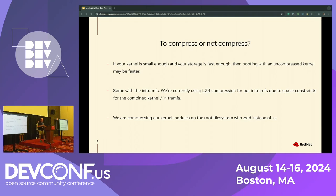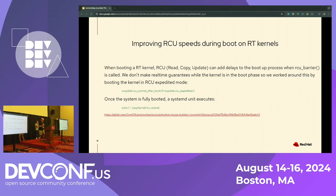Compression is also another thing. If your kernel is small enough and your storage is fast enough, you can actually get faster boot times with booting an uncompressed kernel — on one of our targets we were saving about 100 milliseconds with an uncompressed kernel. Same with your initramfs — on one target we have a combined initramfs and kernel with space constraints, so we're actually LZ4-compressing the initramfs. On the root file system we use ZSTD compression instead of XZ.